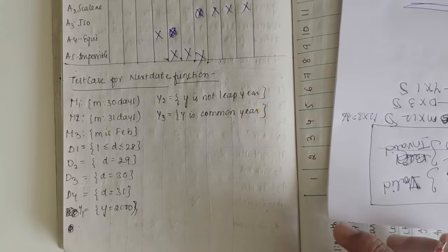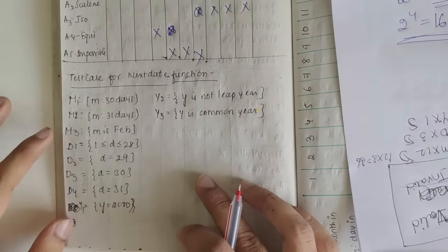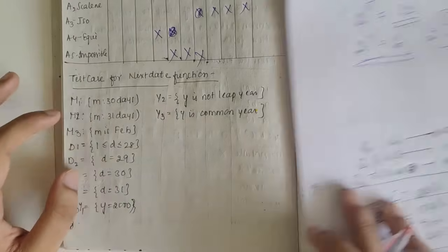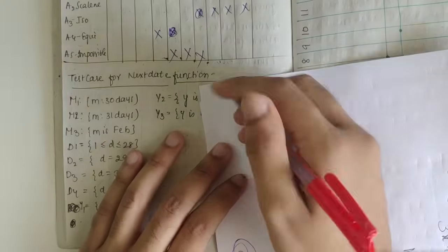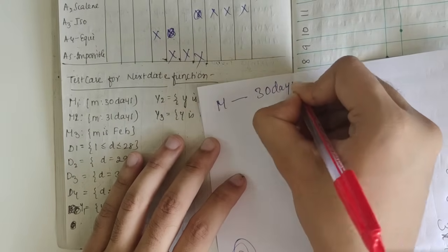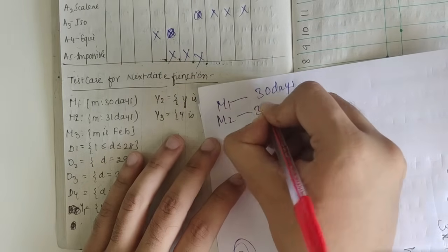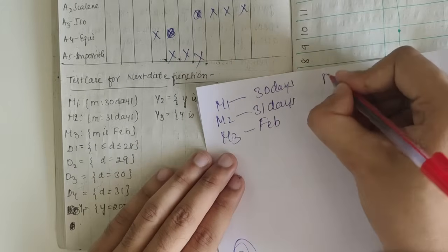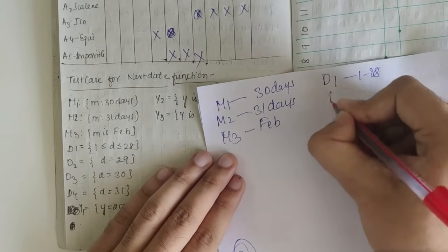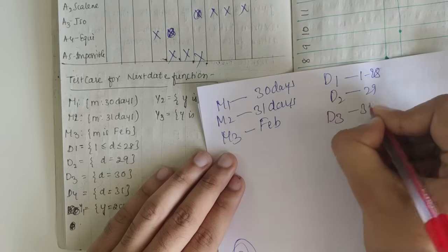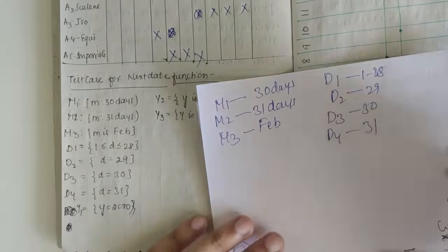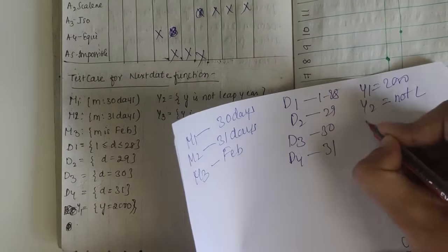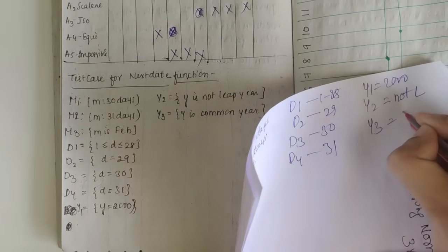For the next date decision table (second try), conditions are: M1 (30-day month), M2 (31-day month), M3 (February), D1 (1-28), D2 (29), D3 (30), D4 (31), Y1 (year 2000), Y2 (not leap), Y3 (common year). Actions include: impossible, increment day, reset day and increment month, reset month and increment year. 16 rules total using 3 month, 4 day, and 3 year categories.